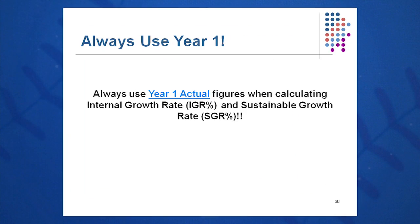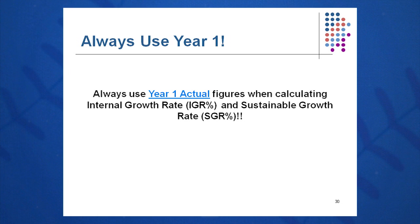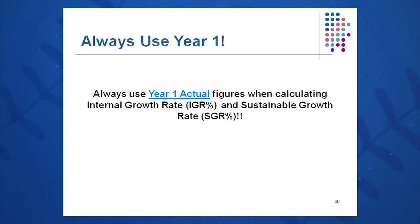Now I'm trying to forecast what this growth rate will be. Looking back at the income statement and balance sheets we just created — which year do you use? Do you go to year one numbers or year two numbers? The answer is simply year one. Always use year one when calculating IGR and SGR. Those are actual results, and from those actual results you can calculate your internal growth rate for the future without any external financing.